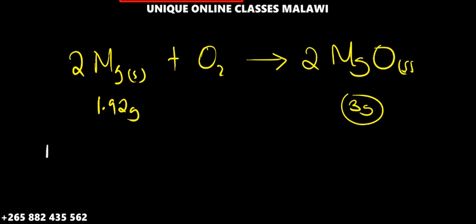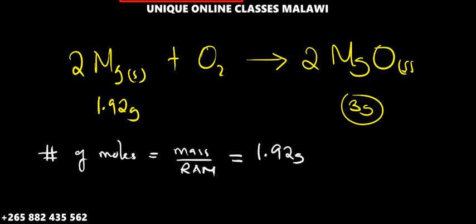Number of moles is equal to mass over molar mass (RAM). So the mass here that we have is 1.92 grams. Then you should divide this one by the RAM of magnesium.